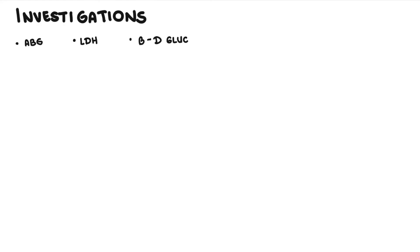Investigations to order for anyone with suspected Pneumocystis pneumonia include an ABG to evaluate the severity of hypoxemia. Lactate dehydrogenase (LDH) can be ordered and is actually a good clinical indicator of possible Pneumocystis pneumonia, specifically in HIV patients. Beta-D-glucan, which is part of the cell wall of the fungus, can be checked in the blood — if it is not found, this is helpful to rule out the presence of this fungus.